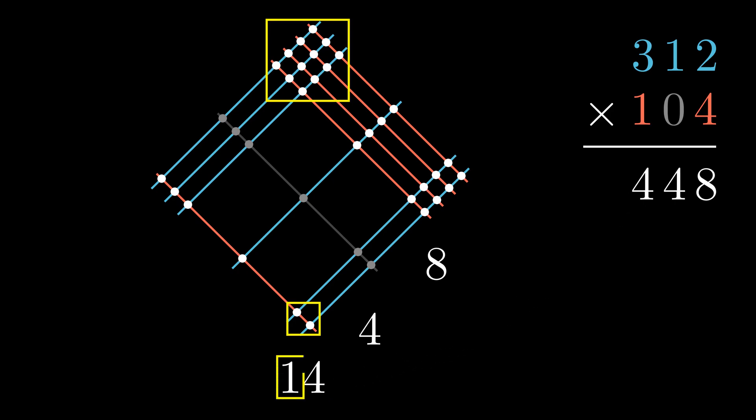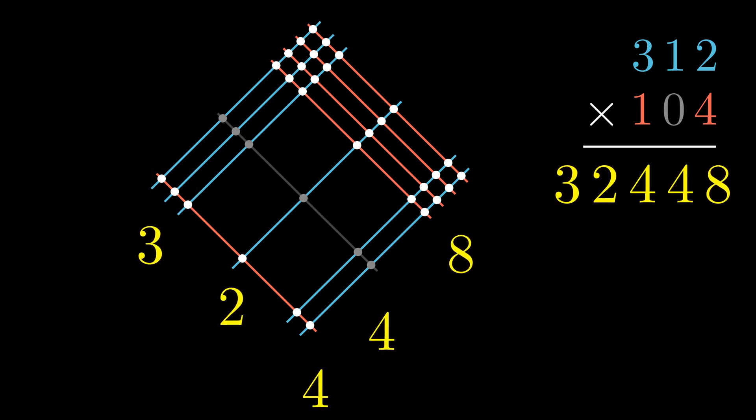And then again 1 will be carried over to the next column, and so on. So the product of 312 and 104 is 32,448.